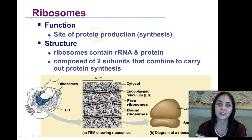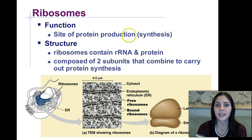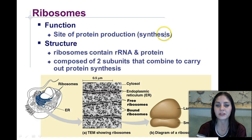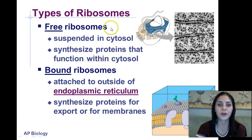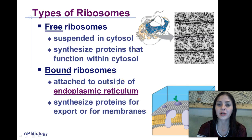Ribosomes — you should all know by now that the function of ribosomes is to make protein, or protein synthesis. Ribosomes contain ribosomal RNA and protein, and they are composed of two subunits that combine to carry out protein synthesis. We have the large subunit and the small subunit. Now some ribosomes are free-floating — we call those free-floating ribosomes — and other ribosomes are attached to the endoplasmic reticulum. Free ribosomes are suspended in the cytosol and synthesize proteins that function within that cytosol. Bound ribosomes, meaning those located on the endoplasmic reticulum, synthesize proteins for export.